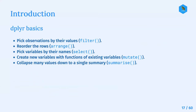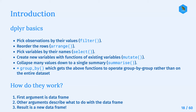Some basics of dplyr: you can pick observations by their values using filter, reorder rows using arrange, pick variables by their names with select, create new variables with functions of existing variables using mutate, and collapse many values down to a single summary using summarize - which can be spelled with an S or a Z. There's also group_by, which gets the above functions to operate group by group rather than on the entire dataset.